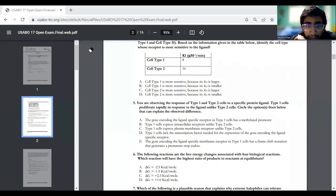Question five. You're observing the response of type one and type two cells to a specific protein ligand. Type one cells proliferate rapidly in response to the ligand, unlike cell type two. So which explains the difference? Option A, we have the gene encoding the ligand specific receptor has a methylated promoter.